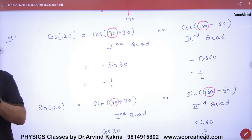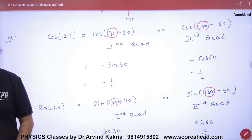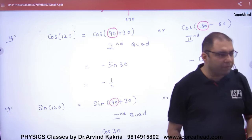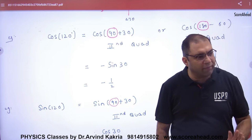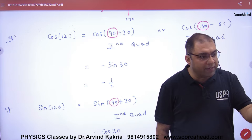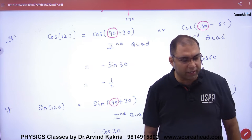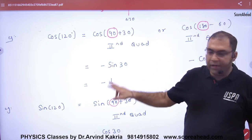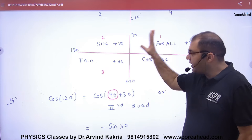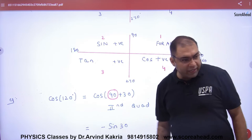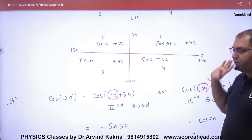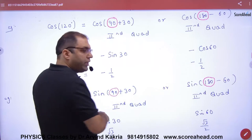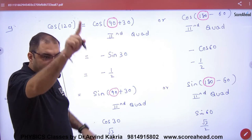Let's find the value of cos 120. To do this, you need to break the angle of 120 by writing it in terms of a standard angle — either 0, 90, 180, 270, or 360. So I write cos 120 as cos(90 + 30), where 90 is the standard angle.